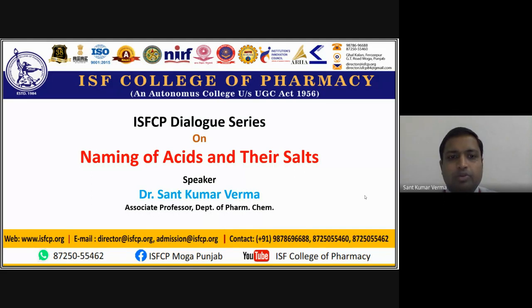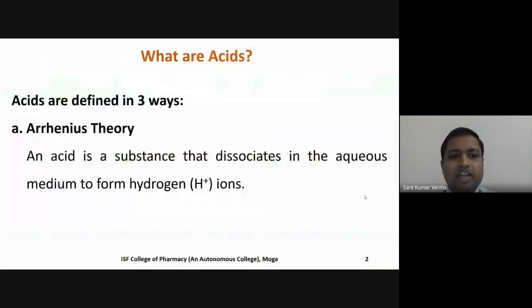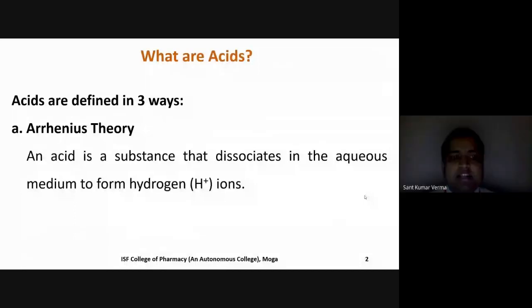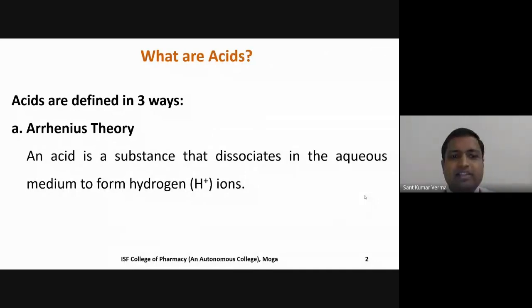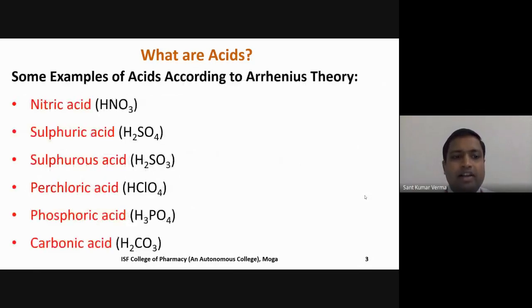Today I will talk about the naming of acids and their salts. Acids can be defined in three ways. First is the Arrhenius theory: according to Arrhenius theory, an acid is a substance that dissociates in aqueous medium to form hydrogen ions. Examples include nitric acid, sulfuric acid, sulfurous acid, perchloric acid, phosphorous acid, and carbonic acid. I will describe how to write the names of these acids in a later section.